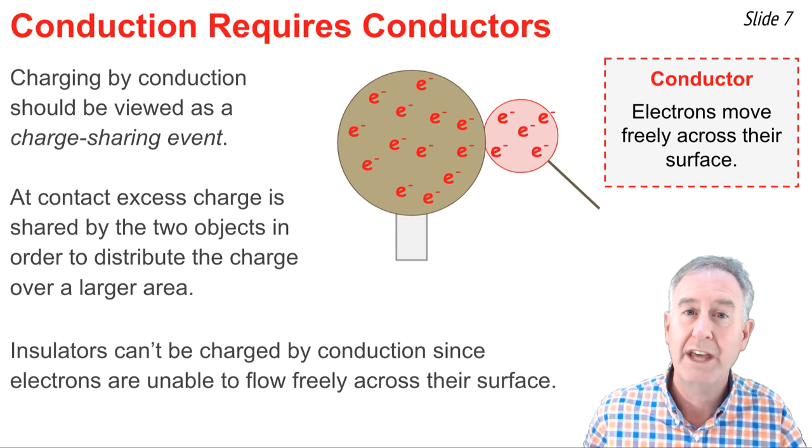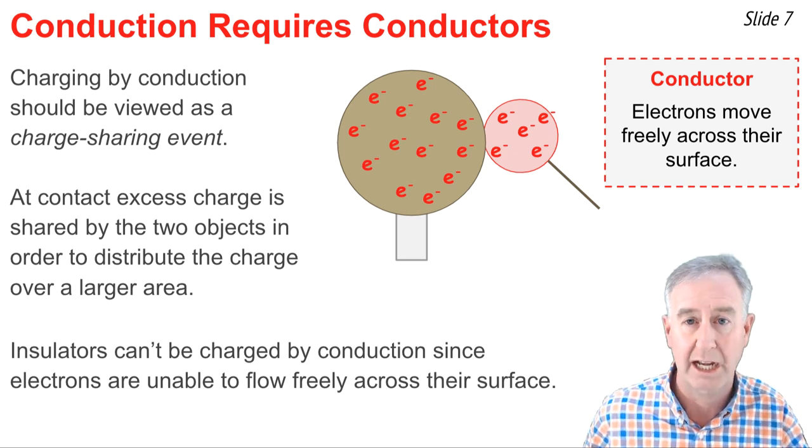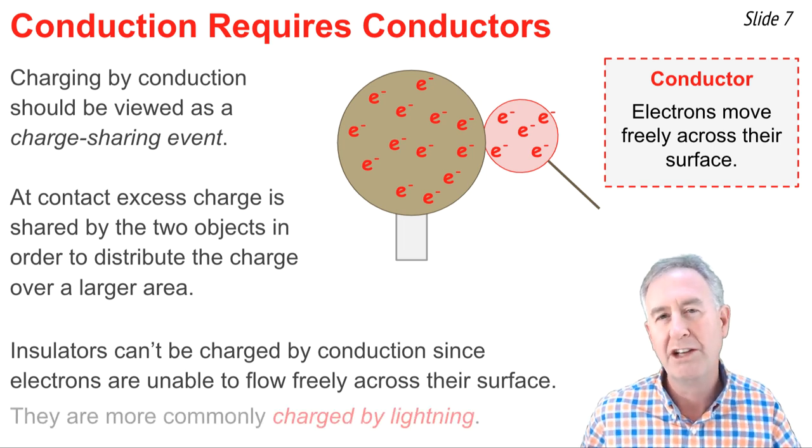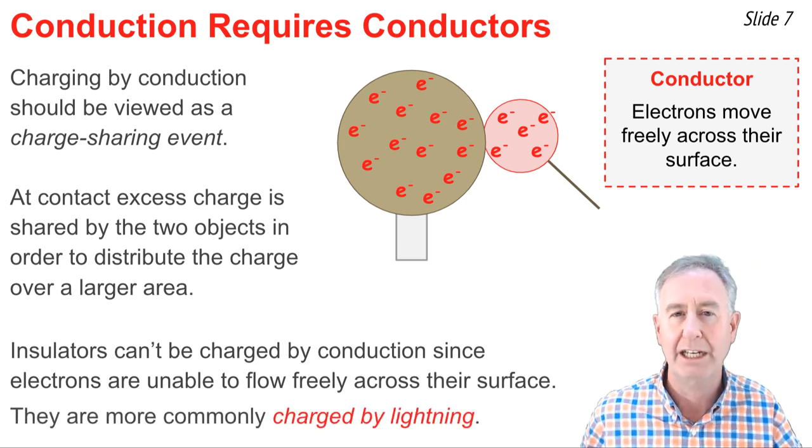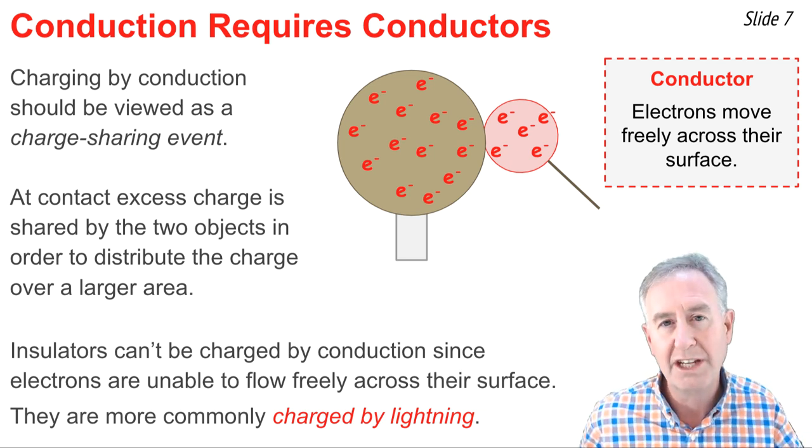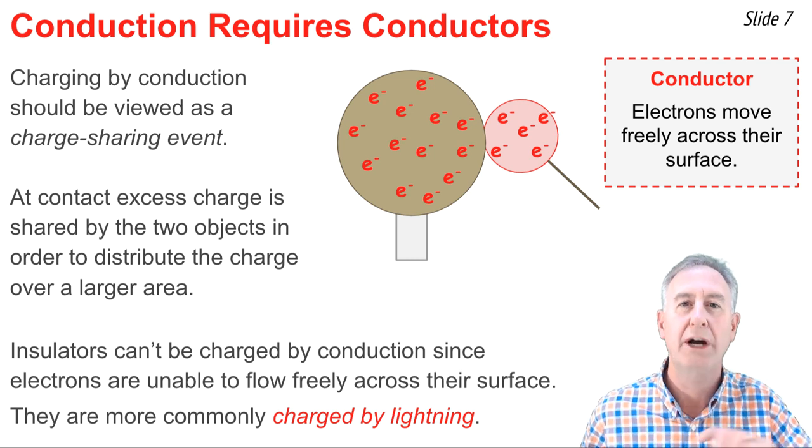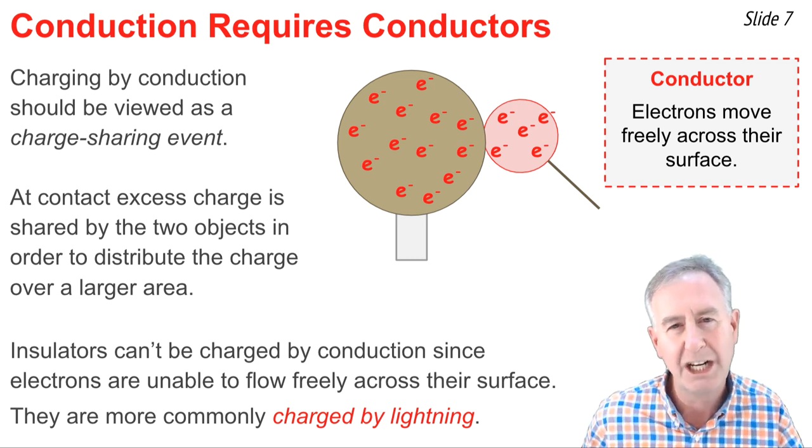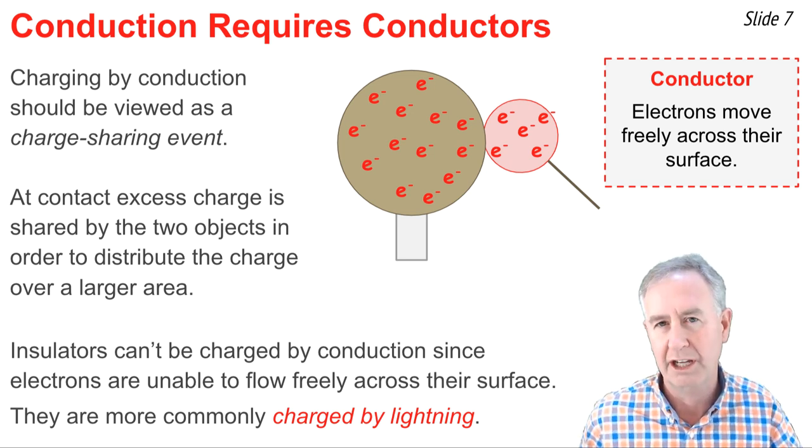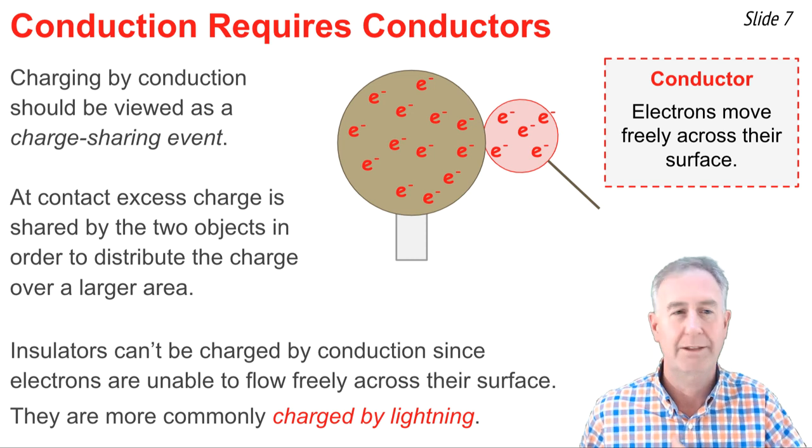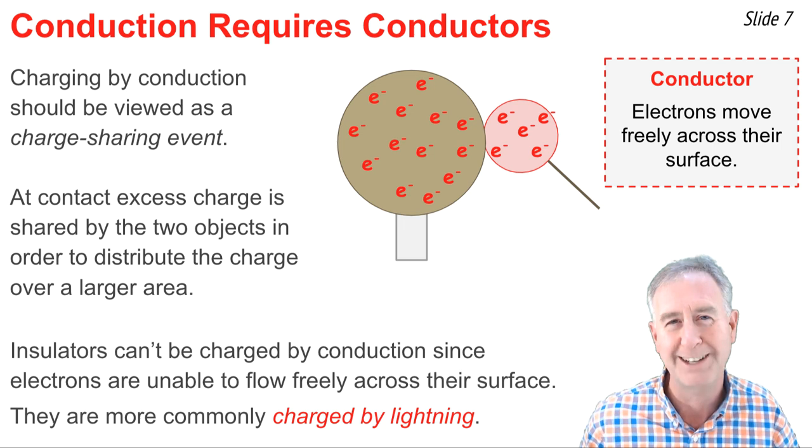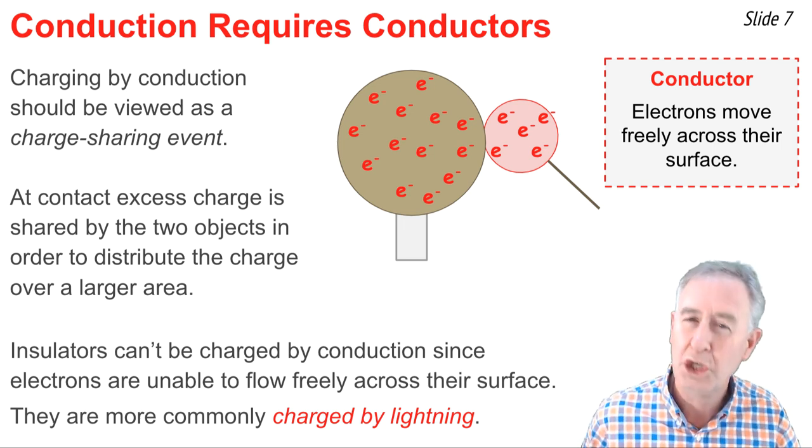And the something that could happen is that insulator could become charged by contact, by touching, but not this conduction process we've been talking about, by a process that I like to call charging by lightning. You'd hear a shock. You'd see a visible spark through the air as excess electrons on one object would jump through the air to the other object. And that occurs if you can get an object really, really charged up and you touch it to an insulator. And now all of a sudden, air breaks down and becomes the conducting pathway through which charge jumps from one object to the other. And I refer to that as charging by lightning.